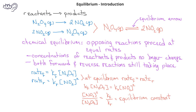As we've mentioned previously, this constant indicates that the ratio of the concentration terms will be the same at equilibrium, and this will be the case no matter what the initial concentrations of the reactants and products were.